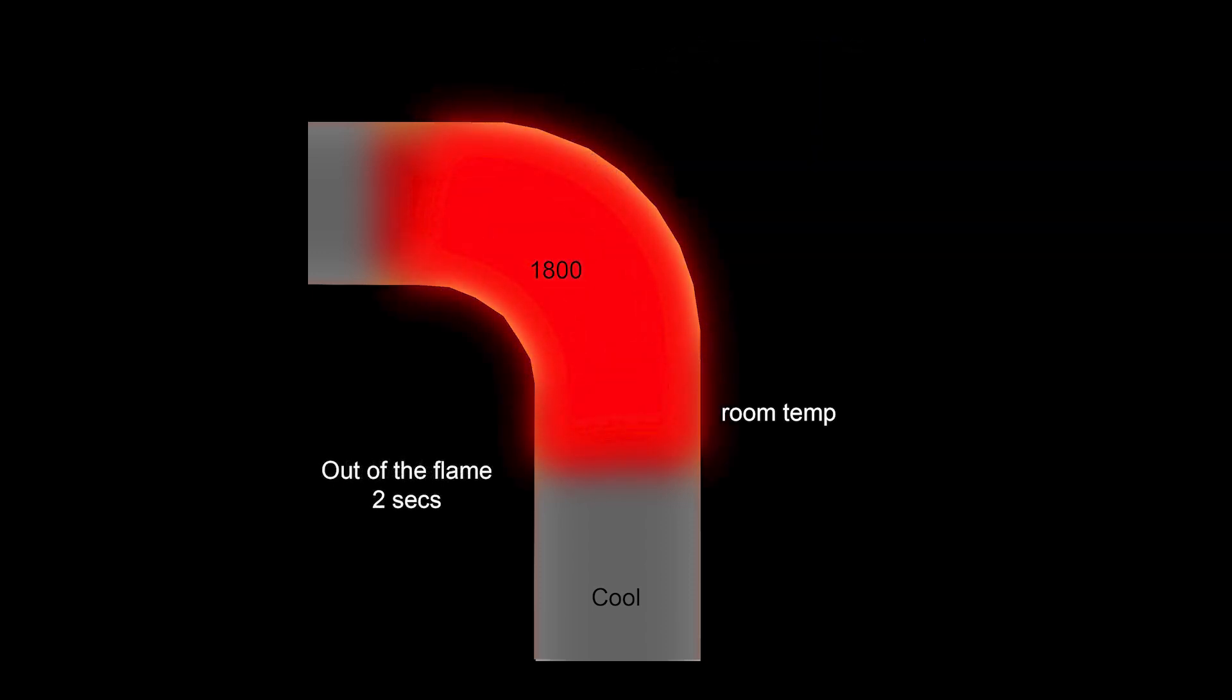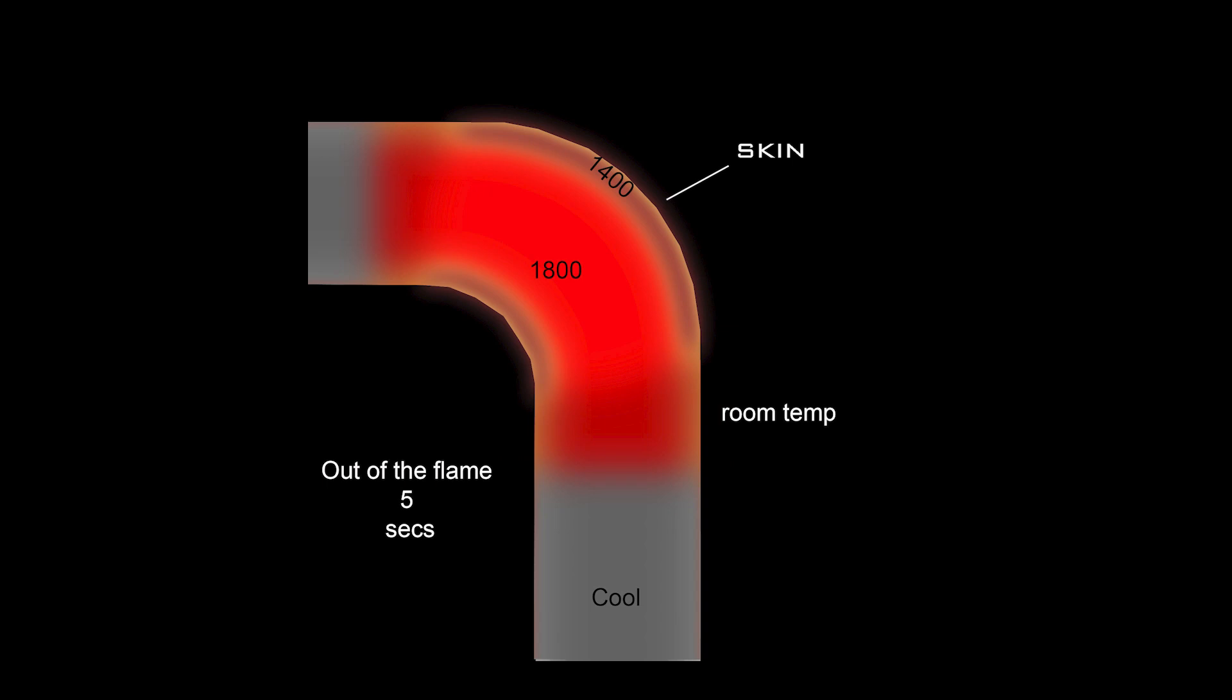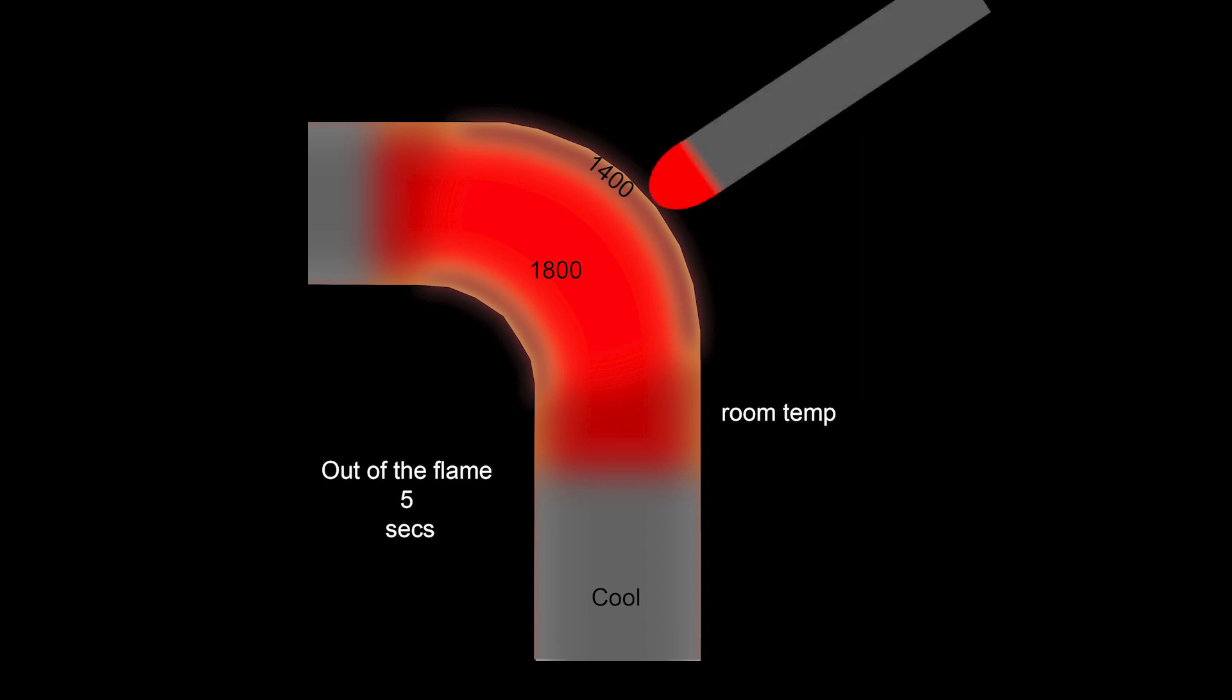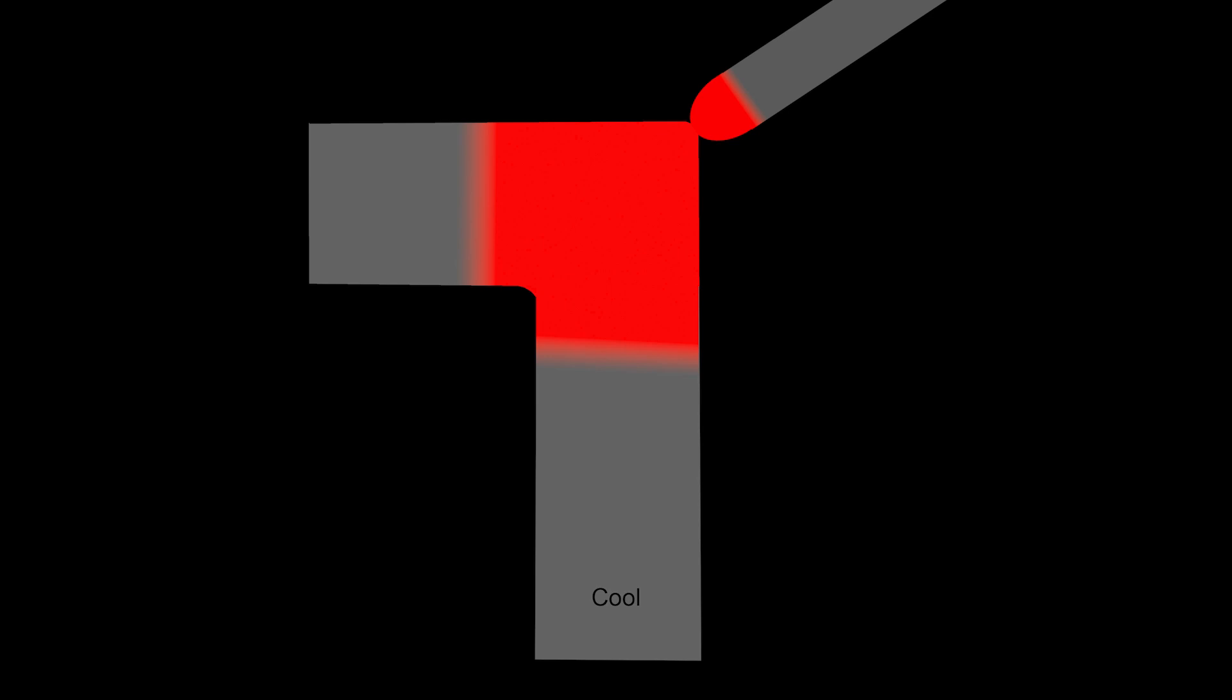But if we wait just a few seconds after taking the glass out of the flame, the glass develops its skin. And then if we tag the bend and pull, the cooler skin resists pulling while the hotter underlying glass is still malleable. Therefore the entire bend pulls into the desired shape.